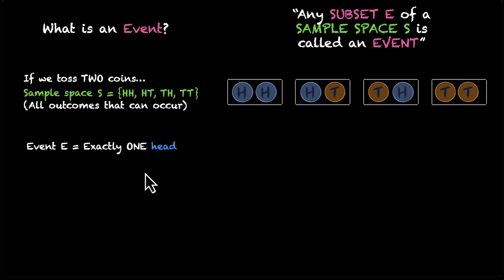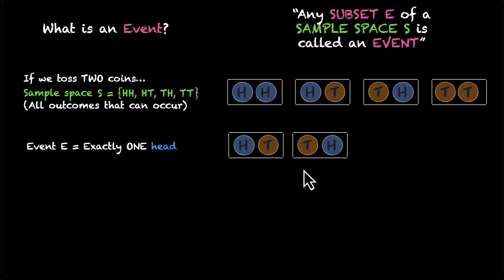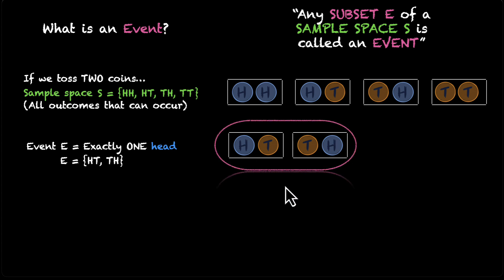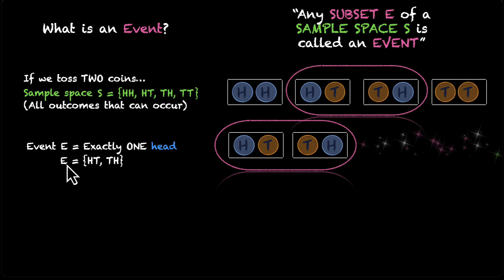For this event E, which is exactly one head, this is what we have. We have these two sample points. We can have the first coin as heads, or we can have the second coin as heads — this is how we get exactly one head. And this is how you write it in set notation: E is the event, and in the bracket you have these two sample points. What you can see is that E is a subset of S — your event E is a subset of your sample space.